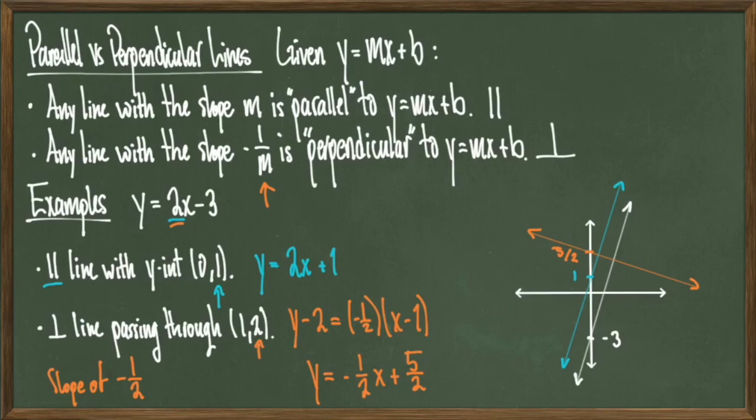So, whenever asked to find parallel or perpendicular lines, you'll be given a line to start with, and then you need to determine what your slope is going to be. Remember, parallel means the same slope. Perpendicular means minus 1 over the original slope. And then, you just have to figure out what point it goes through, which will probably be given in the problem.